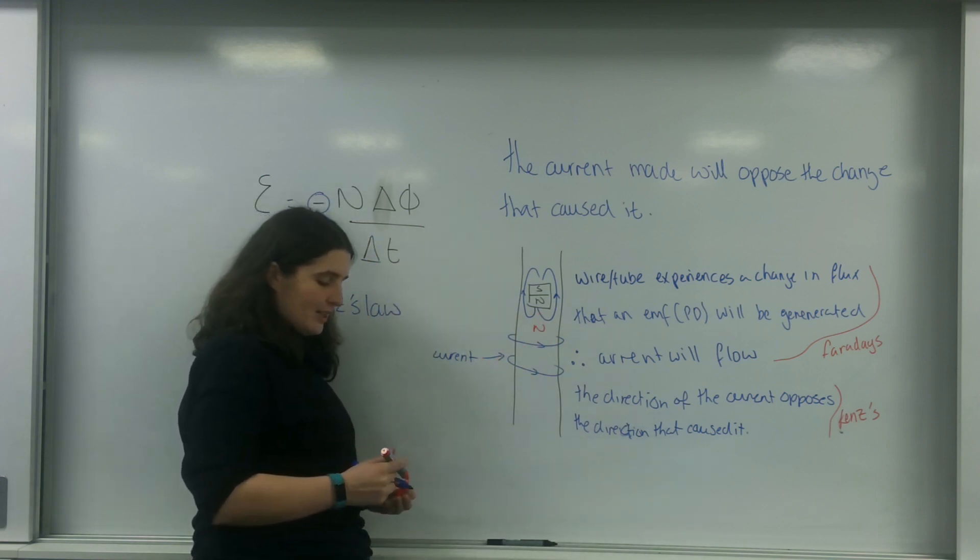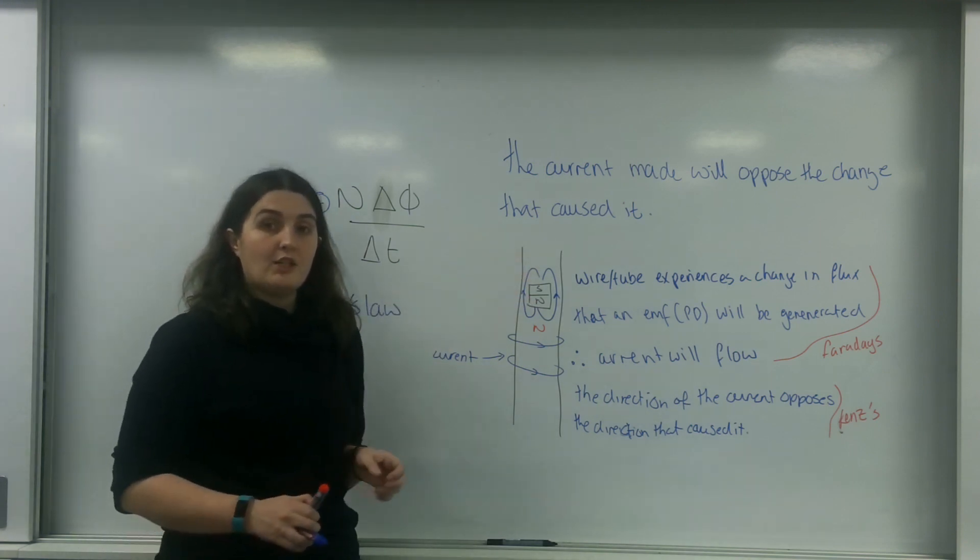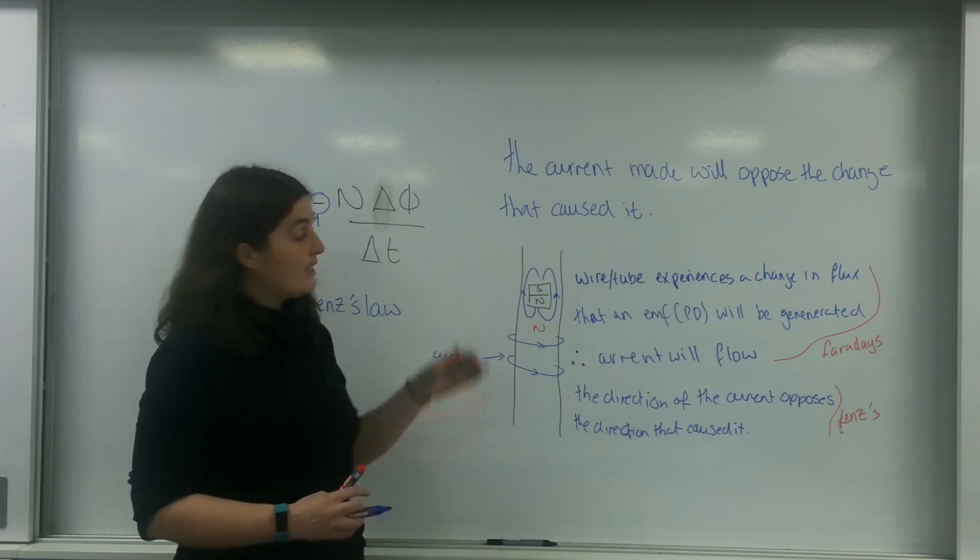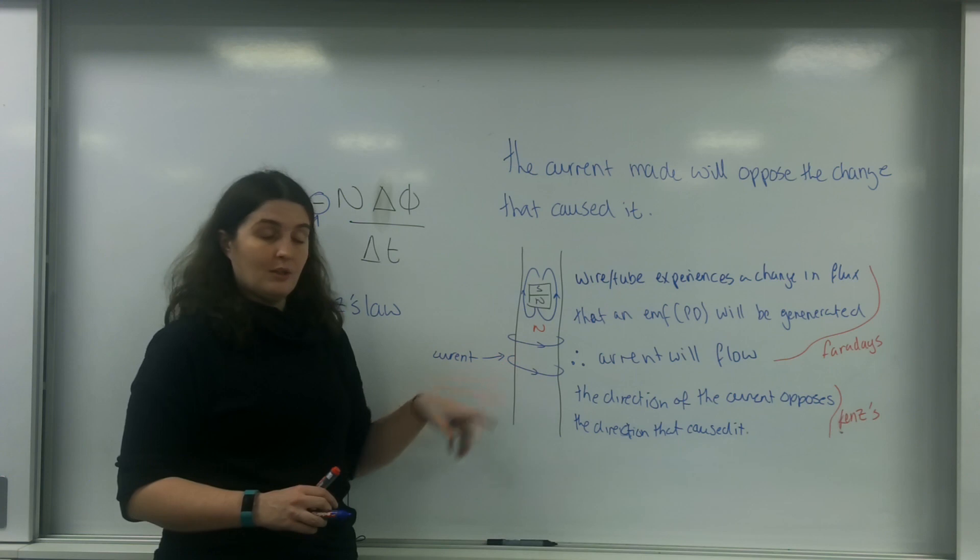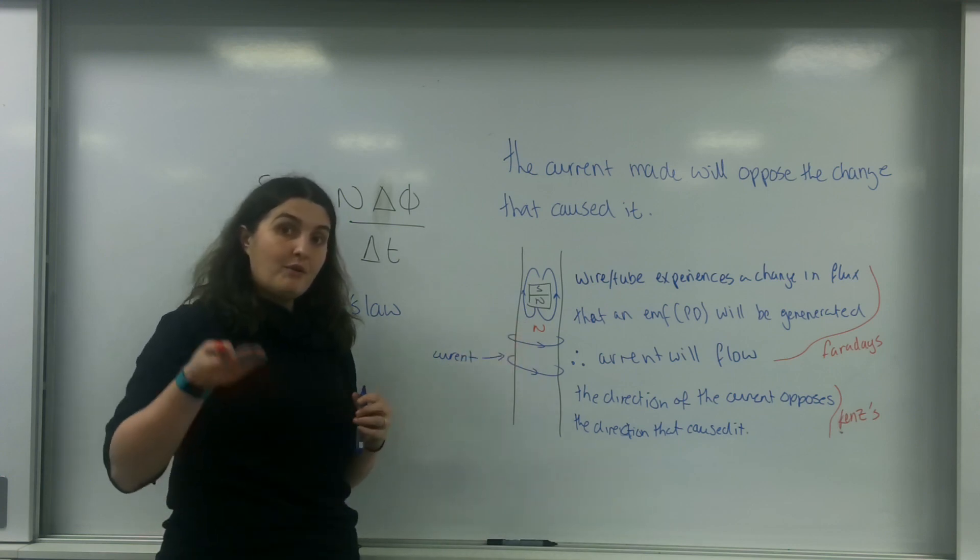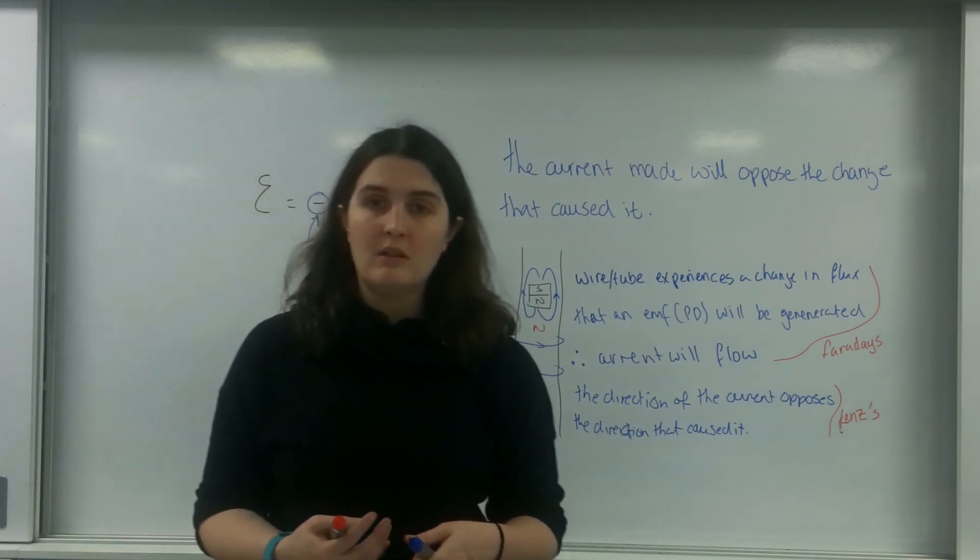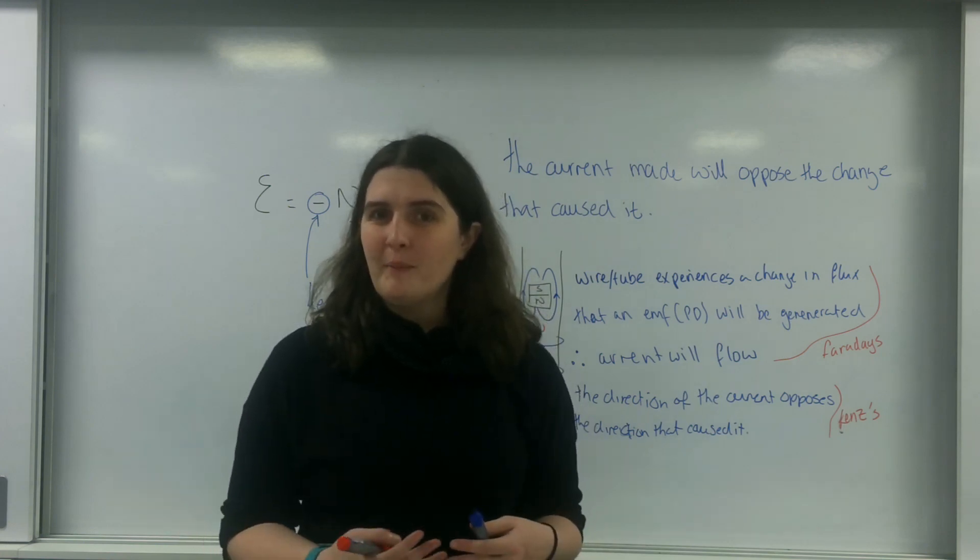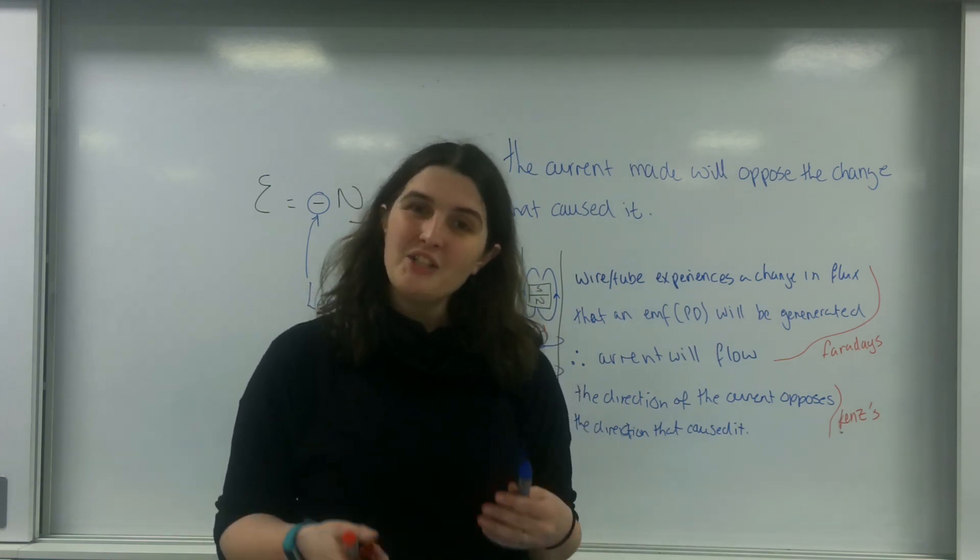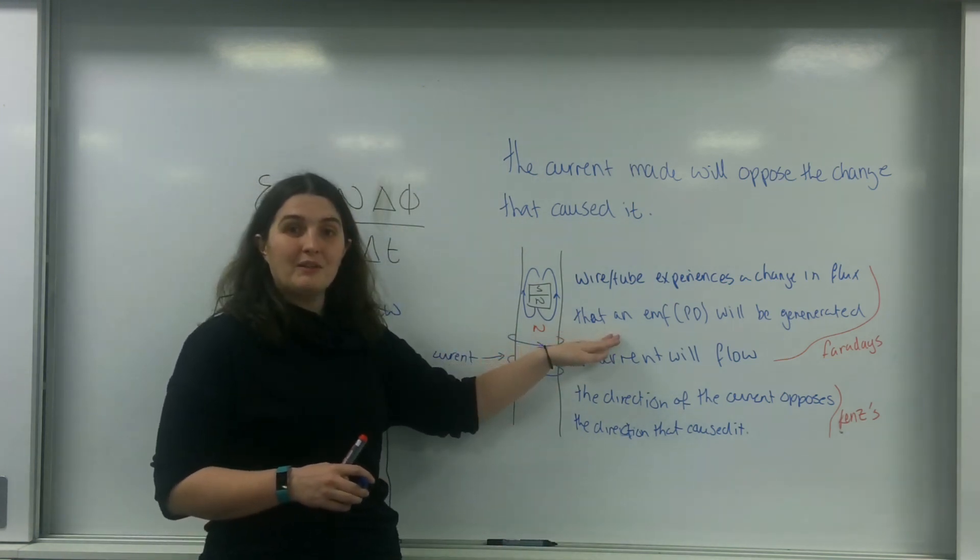And what it's actually doing is quite clever. This object has got gravitational potential energy. It is falling through. What this is doing, by having this north, this is slightly repelling the object, slowing it down. Which means that that GPE has got to go somewhere. And that GPE, that energy, is actually what's going into making the electric field.